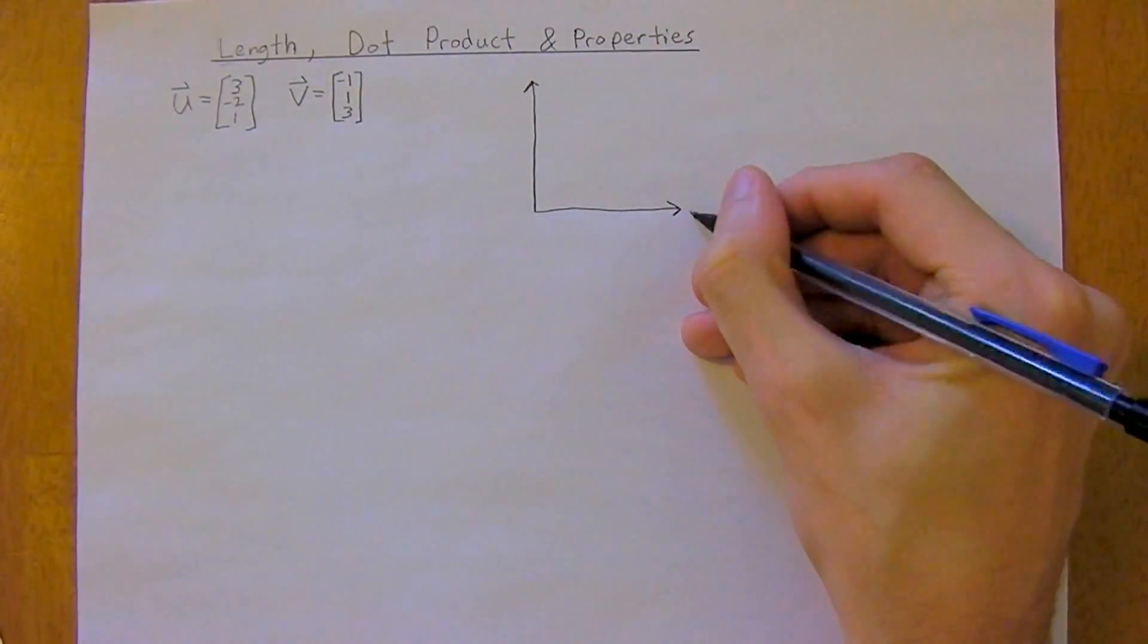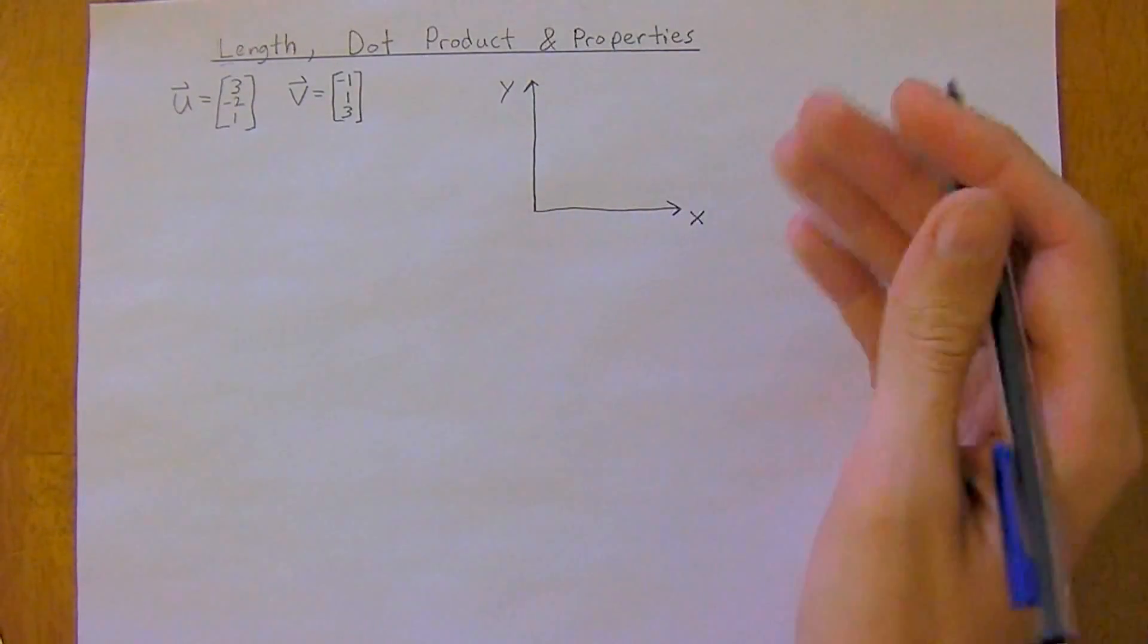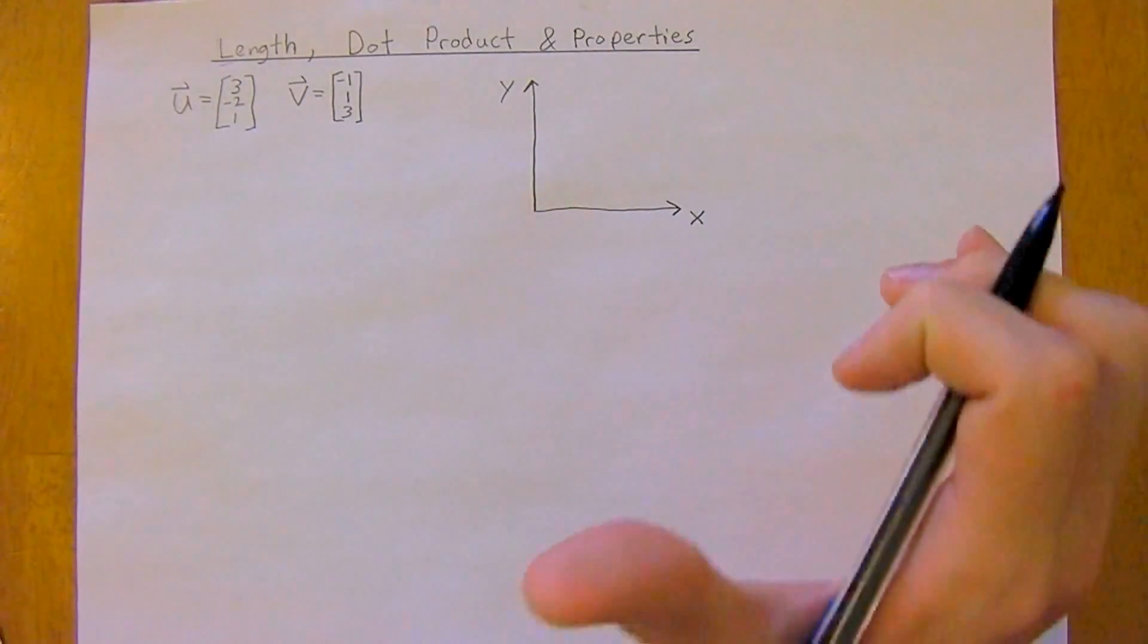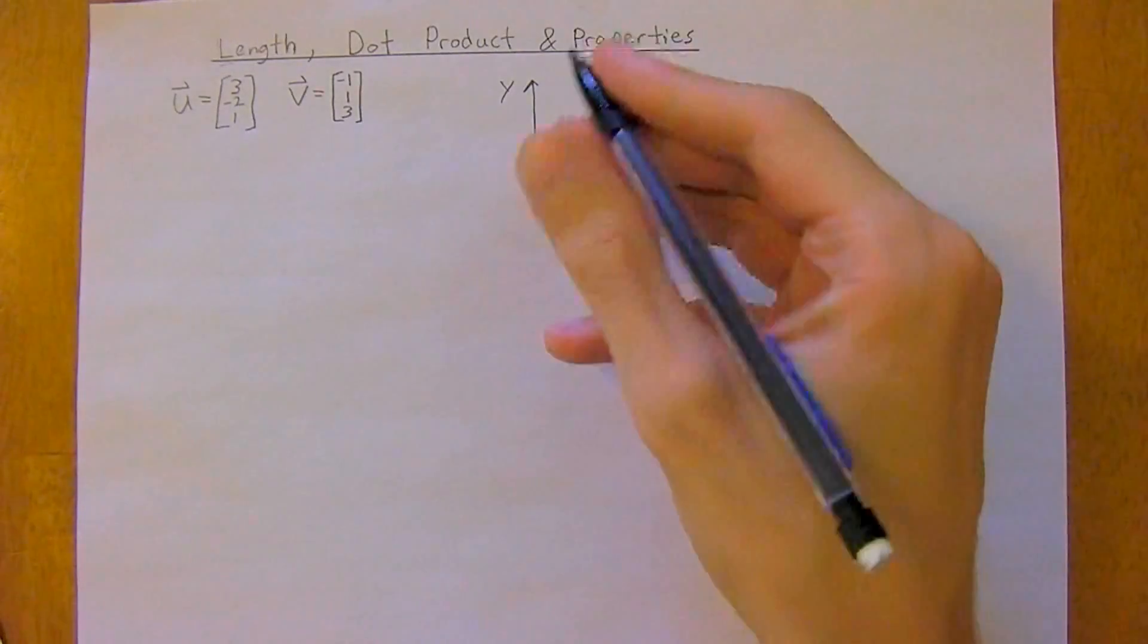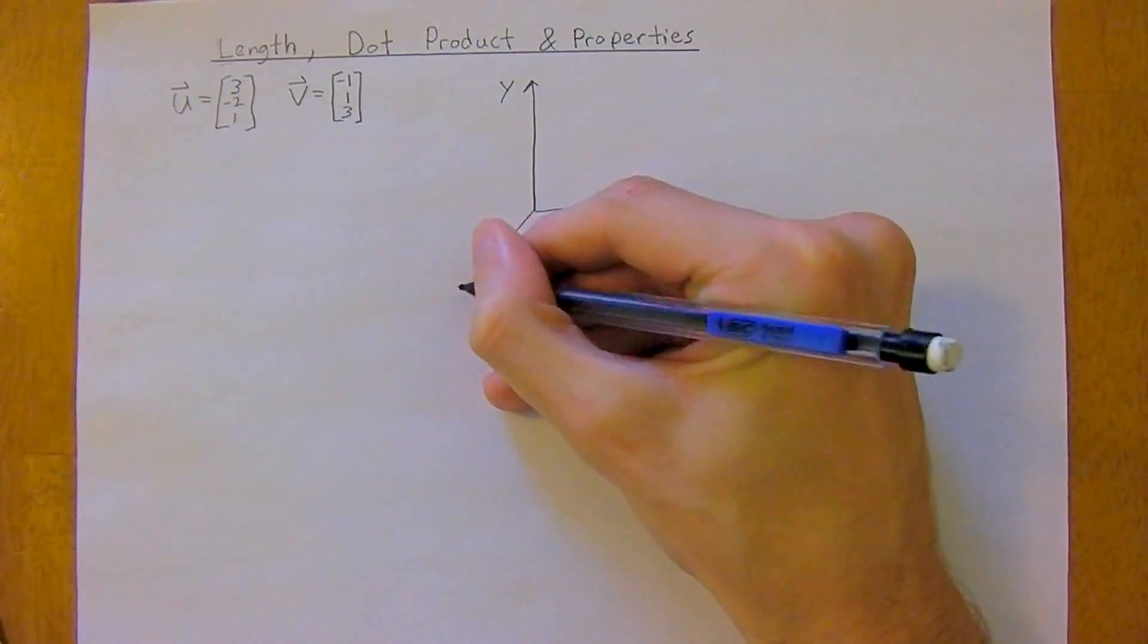So we've got our x and our y axis, and we're going to need a z axis too. So you point your fingers in the direction of x, curl to y, your thumb points in the direction of the z axis. So z should be coming out or towards you.